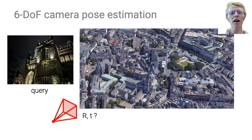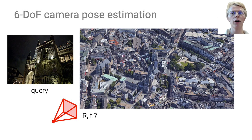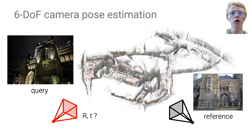We tackle the task of visual localization, which estimates the rotation and the translation of a camera in a 3D environment given a single query image. We assume to have a map of the environment, composed of reference images with poses and a 3D model — for example, a sparse point cloud built with structure from motion.